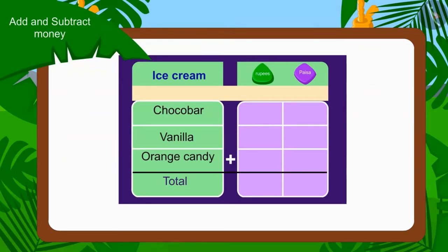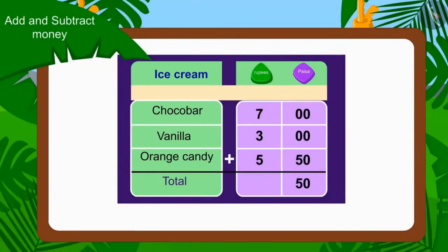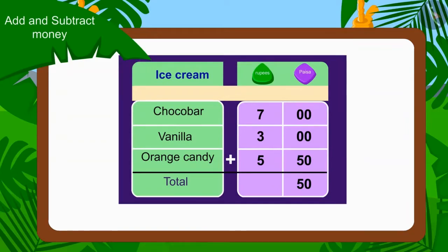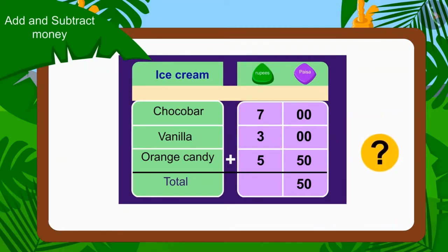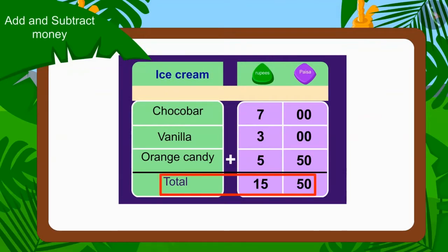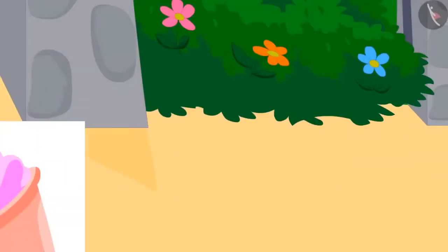We will first write the price of all three ice creams in rupees and paise. Now we will add the amount of paise first. Can you tell the total amount of paise? Right — 50 paise. Then we will add all the rupees. What is the total amount? Yes — 15 rupees. In this way, Raju and Bablu will have to pay 15 rupees 50 paise to Babban.